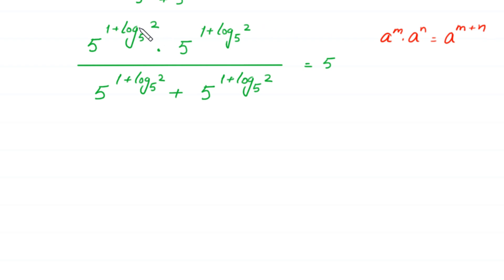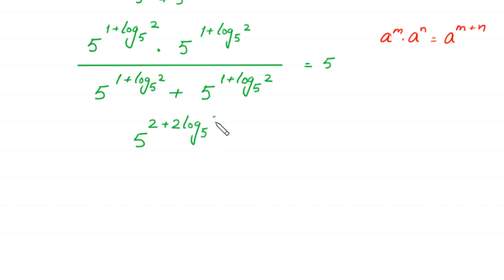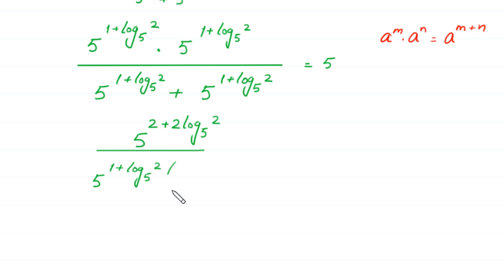Adding the powers: 1 plus log base 5 of 2 plus 1 plus log base 5 of 2 gives 2 plus 2 times log base 5 of 2, so the numerator is 5 to the power (2 plus 2 times log base 5 of 2). From the denominator, we factor out 5 to the power (1 plus log base 5 of 2), leaving (1 plus 1) equals 2 in the bracket, equal to 5.